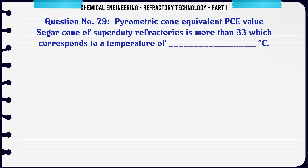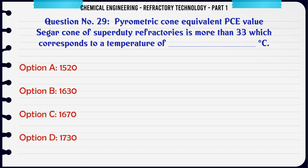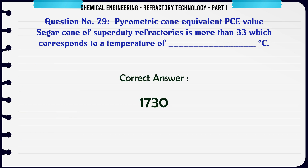Pyrometric cone equivalent (PCE) value — Seger cone of superduty refractories is more than 33, which corresponds to a temperature of ___ °C. A. 1520, B. 1630, C. 1670, D. 1730. The correct answer is 1730.